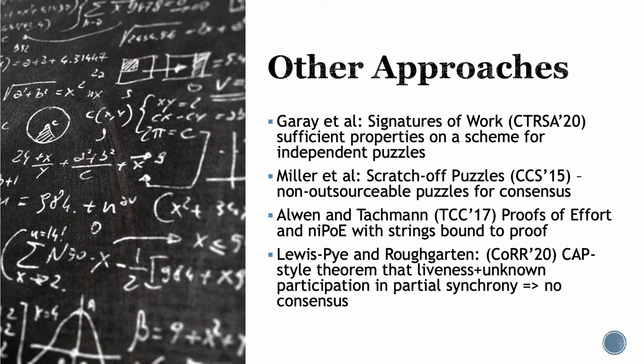Our approach is to define an API for any resource-producing process or protocol such that as long as the resource-producing process fits a few simple properties in the aggregate over the course of an execution, we'll show how to get permissionless consensus. Really what we're doing is focusing on an abstraction of the lottery ticket — so as long as you have a system that produces winning lottery tickets that over the course of an execution fulfills a couple of properties, we're going to show that you have consensus, without making any requirements on the specific algorithms that produce these things.